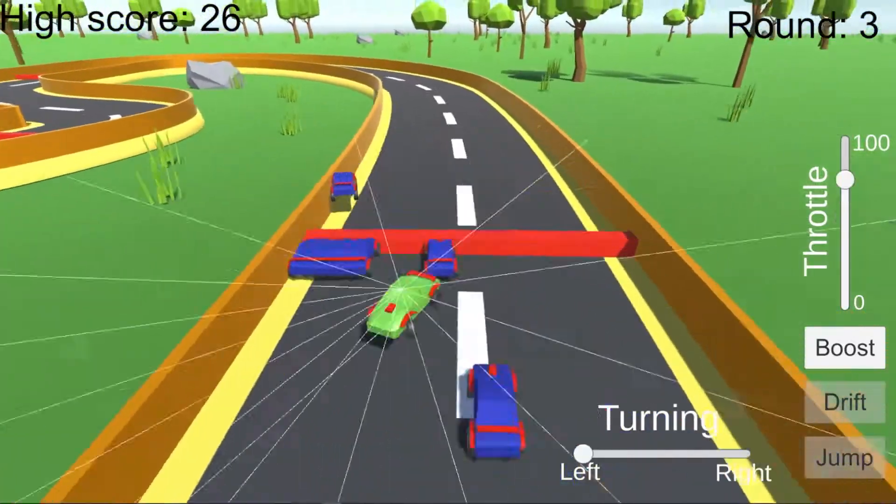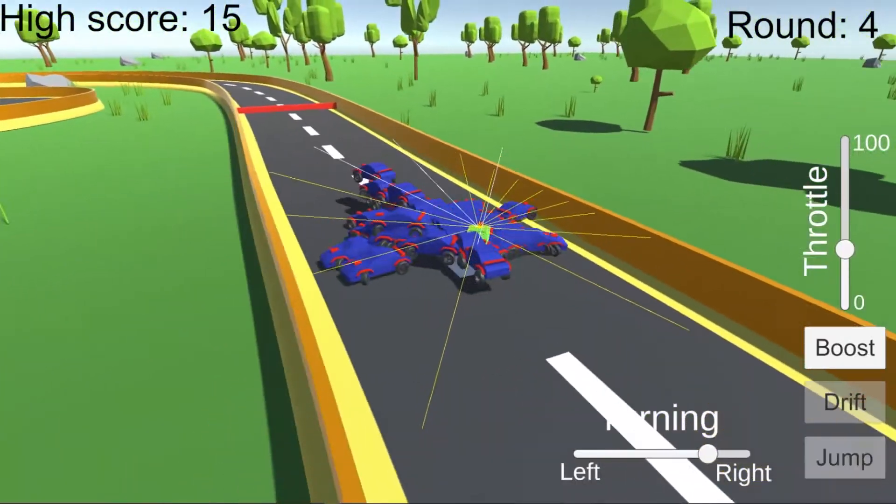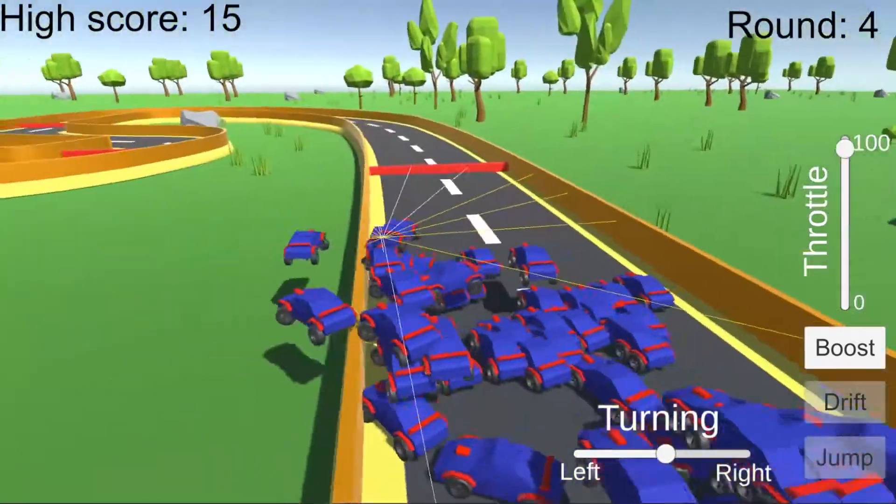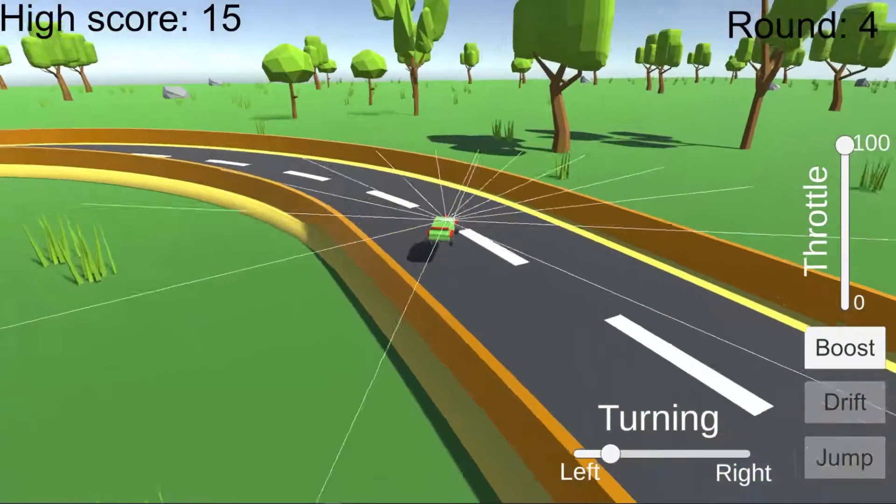The top 10 cars that make it the furthest have their brains copied over to all the other cars in the next round. After that copy happens, we add some more randomness to the network. Otherwise, all the children would just behave exactly the same way as the parents without the randomness.